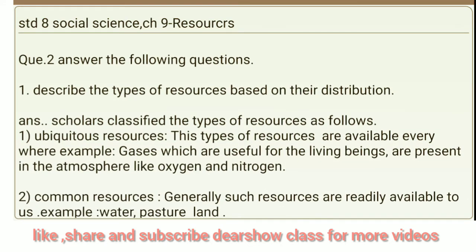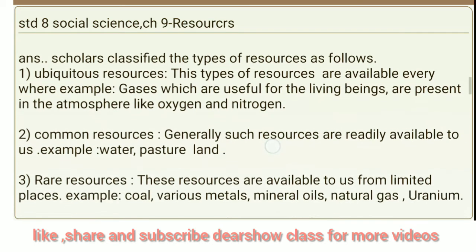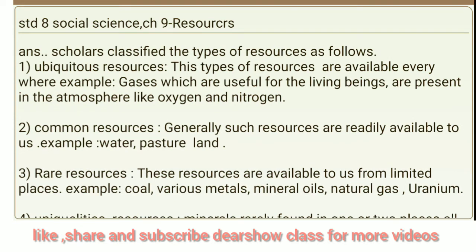Question 2: Answer the following questions. First question: Describe the types of resources based on their distribution. Answer: Scholars classified the types of resources as follows. First, ubiquitous resources — this type of resource is available everywhere. Example: gases useful for living beings present in the atmosphere like oxygen and nitrogen. Second, common resources — such resources are readily available to us. For example, water.